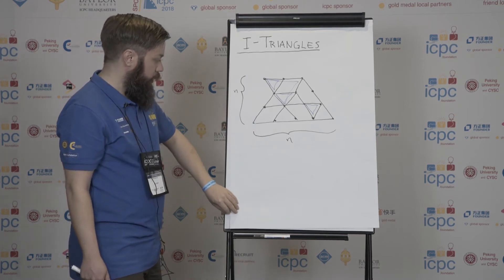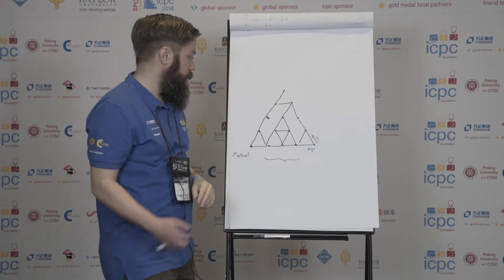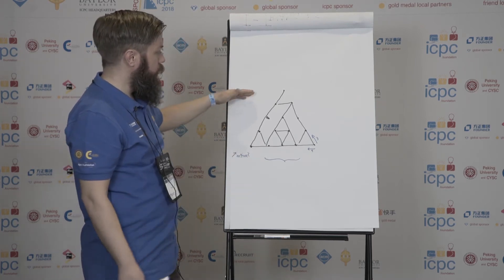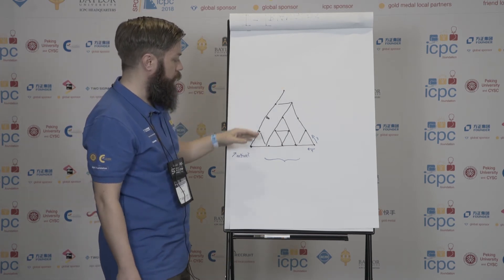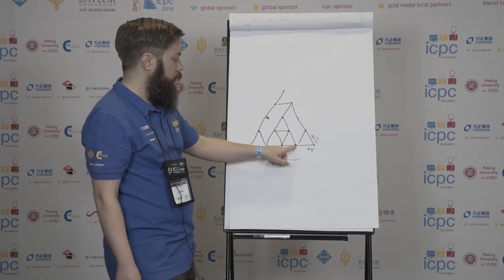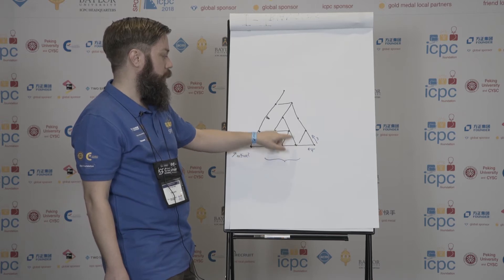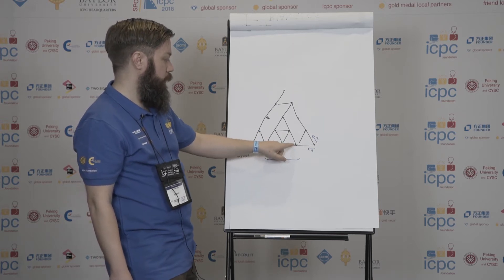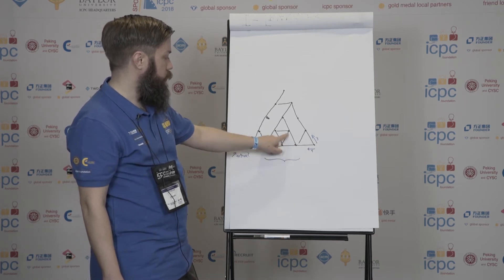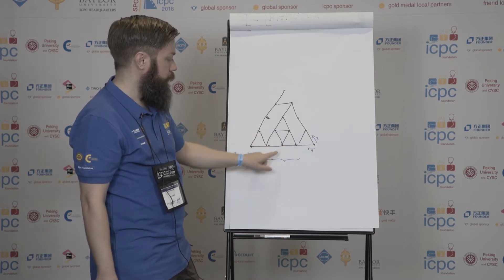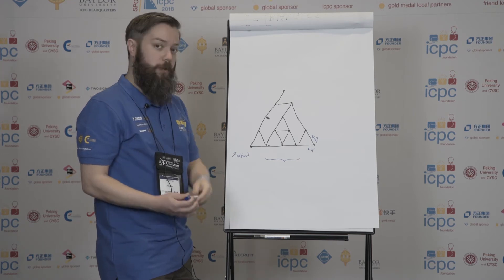So how do we solve this? We go through this grid row by row and column by column, and when we are at a given point, what we compute is the number of triangles which have this point as the lower rightmost point. For this point, for example, the answer is two — there are two upwards-pointing triangles with this point.